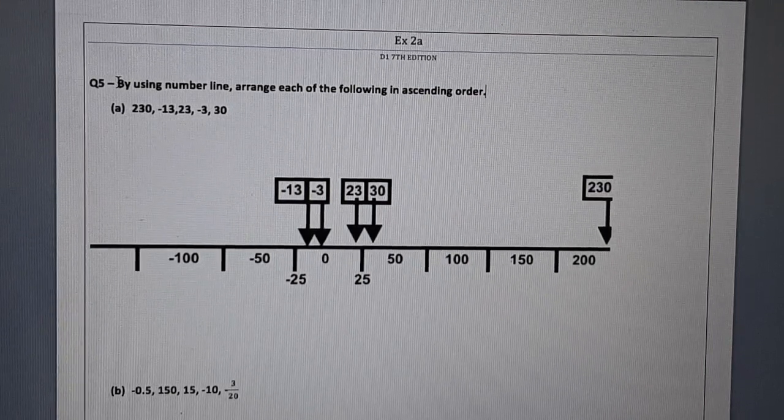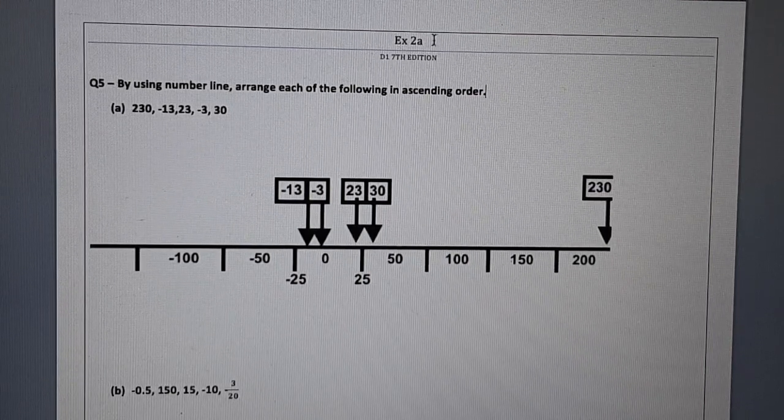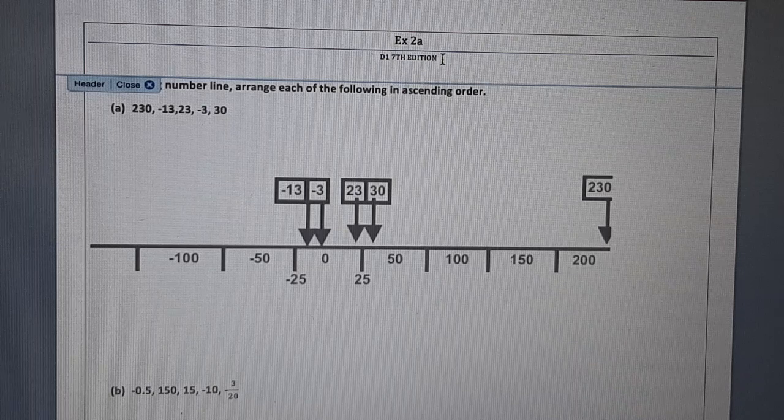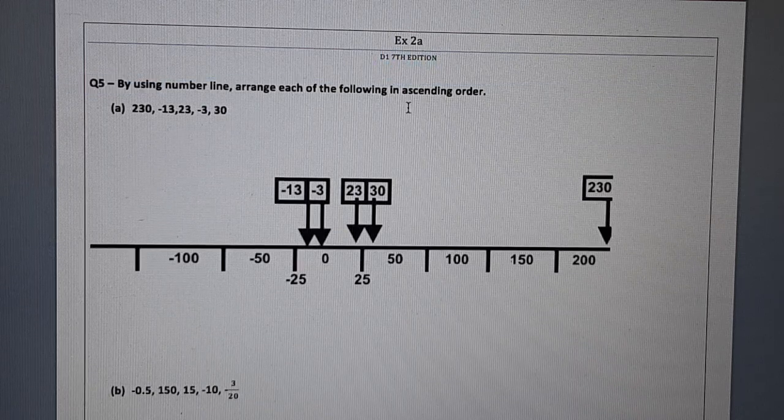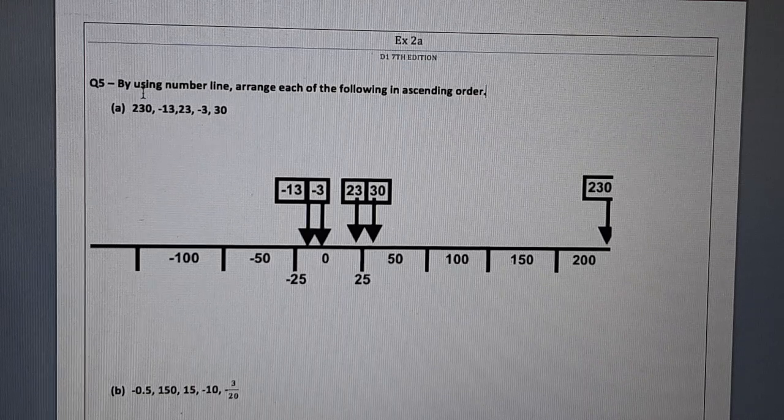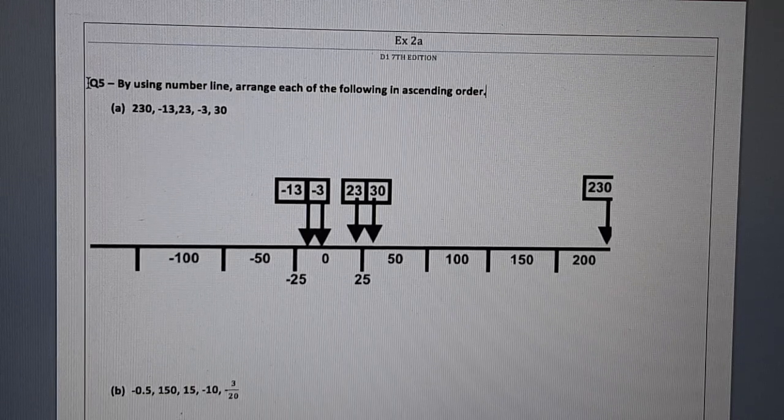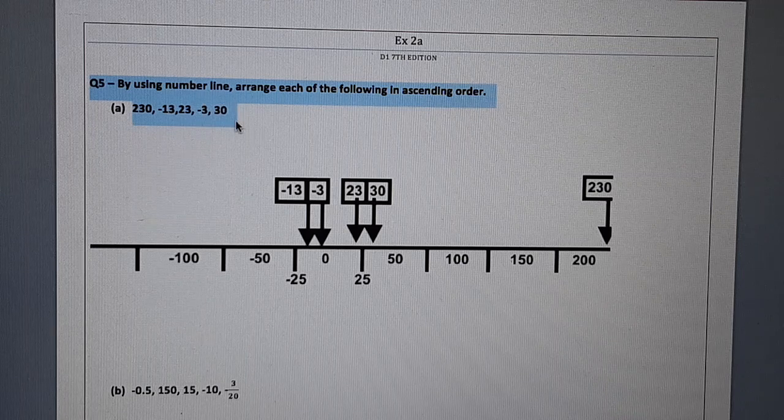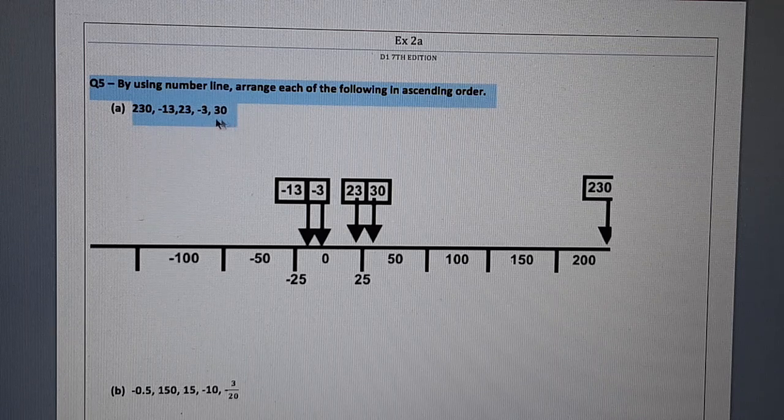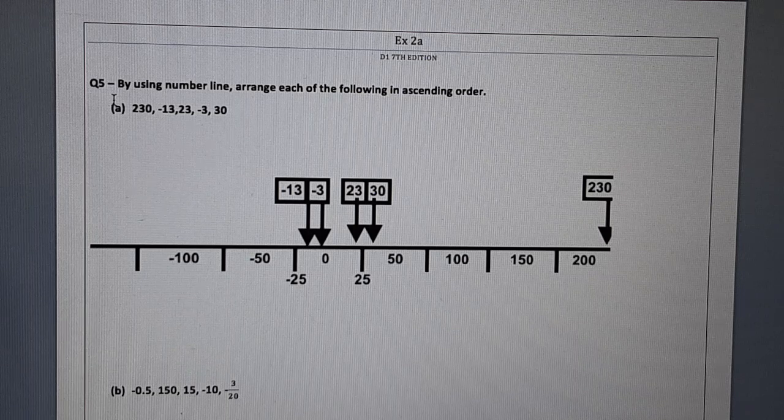This video is related to exercise 2a. The edition is 7th edition and the book is D1. From exercise 2a, question number 5 and onwards till the end will be solved in this exercise. We have solved up till question number 4 in our previous lesson.